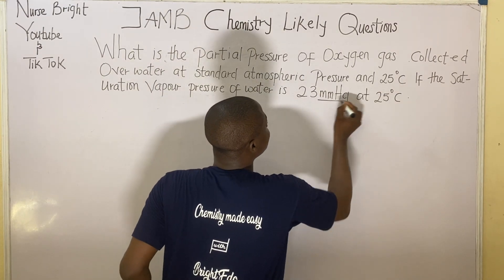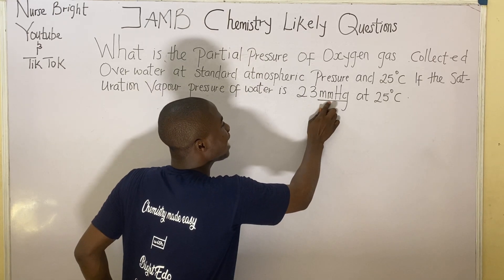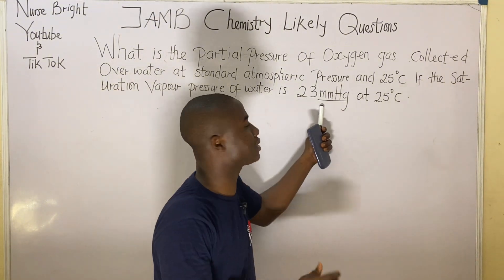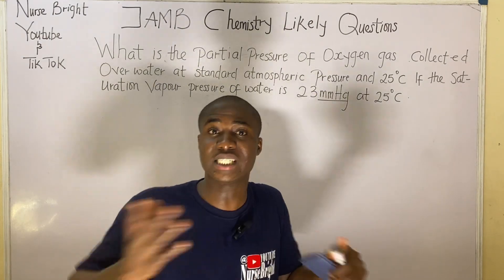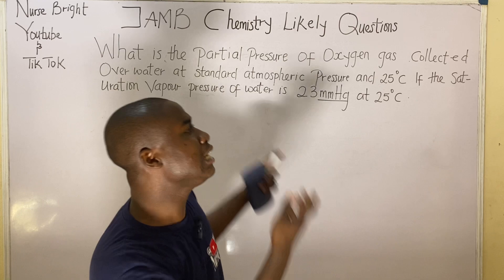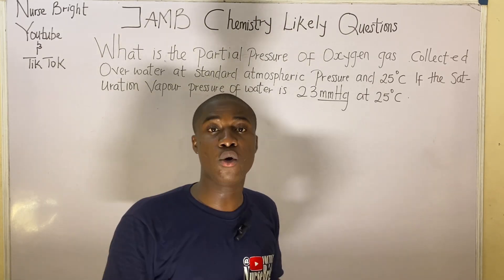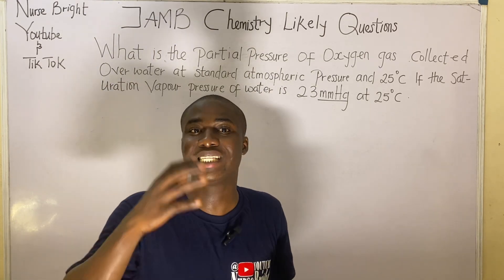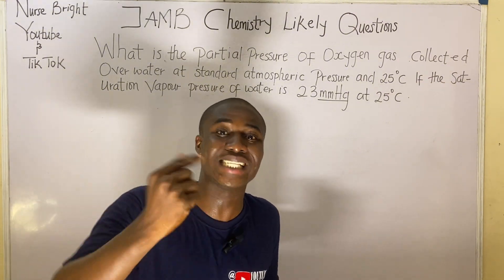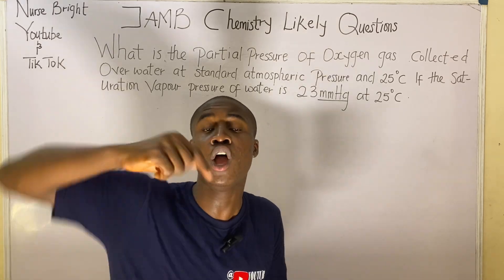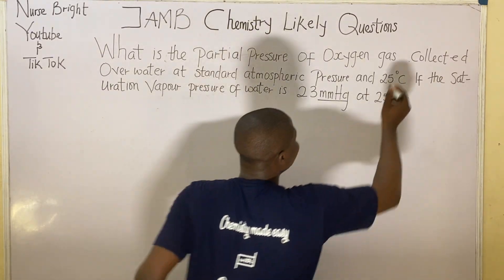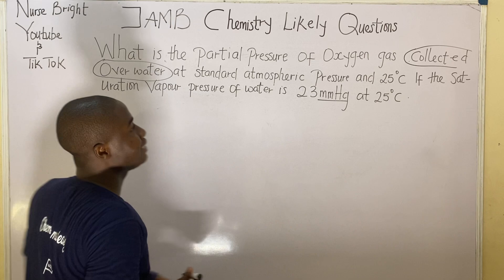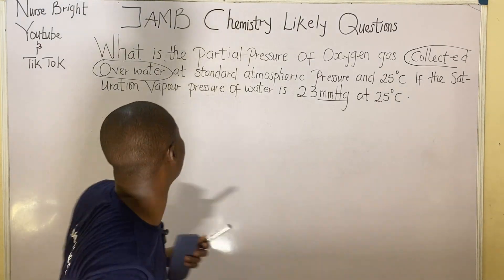Note that mmHg is pronounced as 'millimeters of mercury' — mm means millimeters and Hg is the element mercury. Now, the key statement in this question that tells you which formula to use is 'collected over water'. Please take note of that phrase.